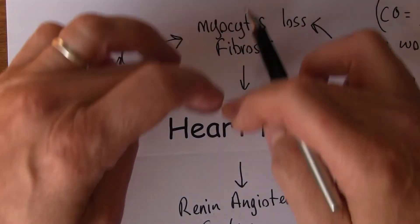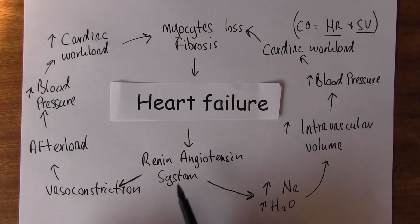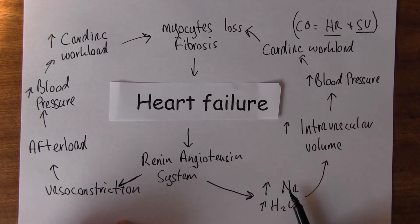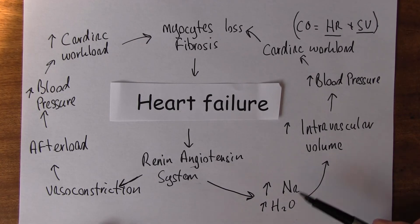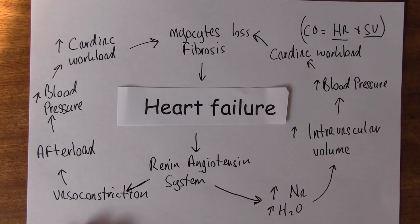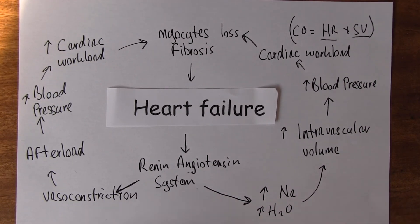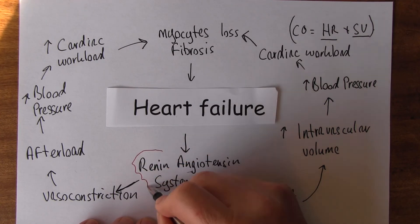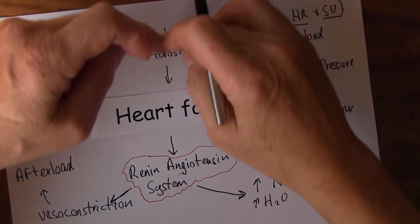So we're going around two vicious circles — two downward spirals — both mediated via the renin-angiotensin system. One operates via the mechanism of sodium and water retention by the kidneys, increasing blood volume. The other operates via this more direct mechanism of vasoconstriction increasing afterload. The renin-angiotensin system is the key common pathway to both of these downward spirals.